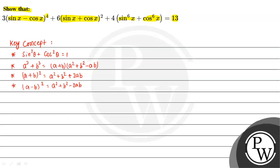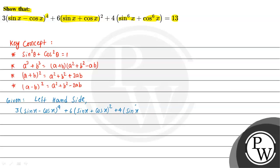Using these formulas and trigonometric identities, we will solve this question. So let's write down the left-hand side. That is: 3 into (sinx minus cosx) whole to the power 4, plus 6 into (sinx plus cosx) whole squared, plus 4 into (sin⁶x plus cos⁶x).